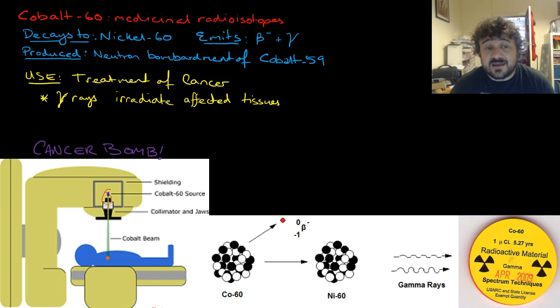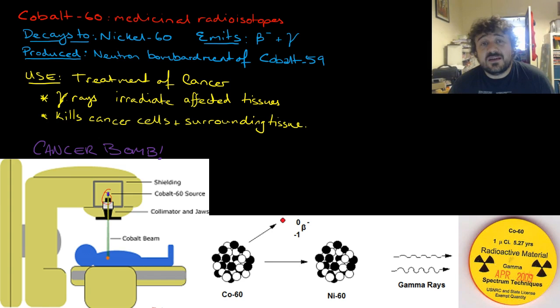So it's used for treatment of cancer. The gamma rays irradiate the affected tissue which kills the cancer cells, as well as, and this is the downside of it, the surrounding tissue.